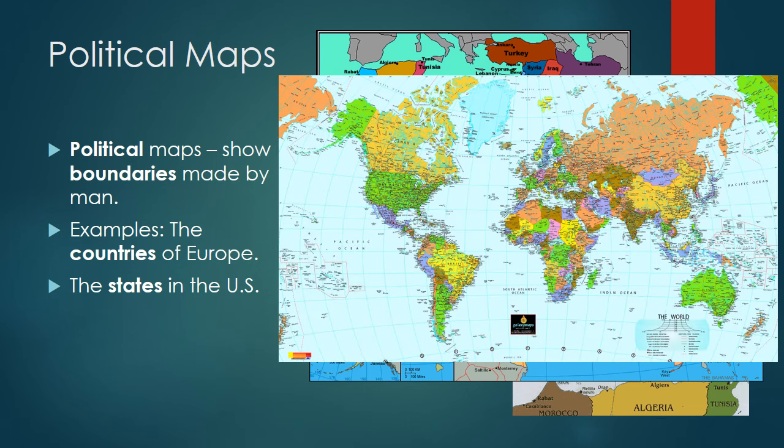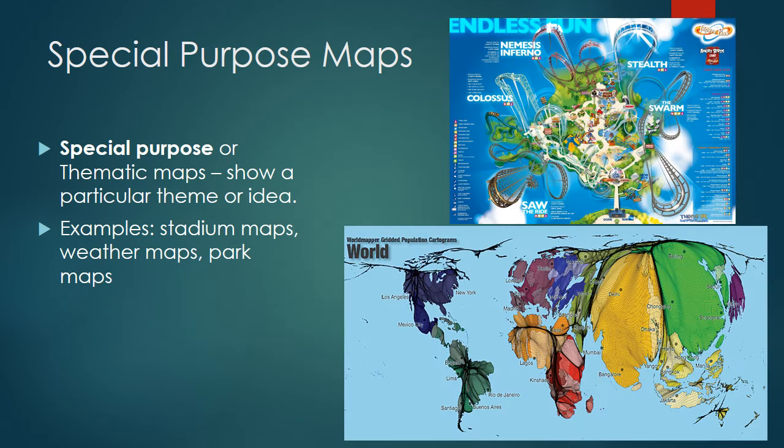And there is a political map of the whole world. Special purpose maps are also called thematic maps. They show a particular theme or idea. Think about stadium maps if you've been to a concert or a sporting event, weather maps on TV, and park maps — like the one on the top of the screen, which is an amusement park map.